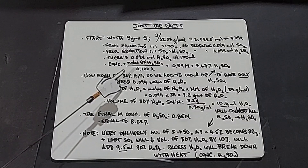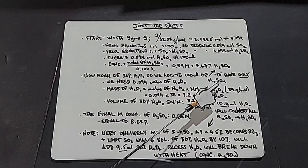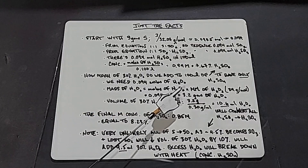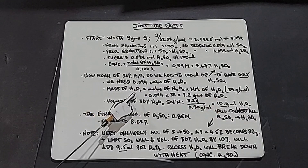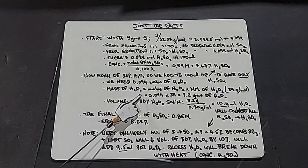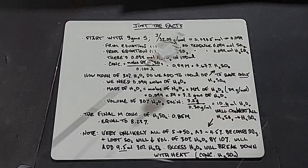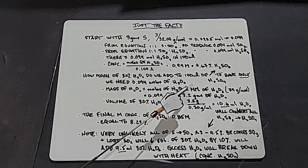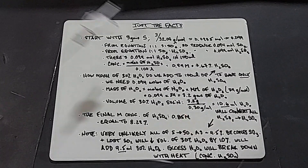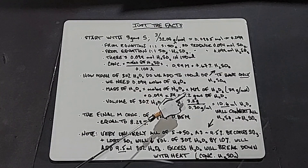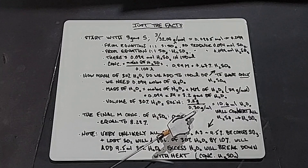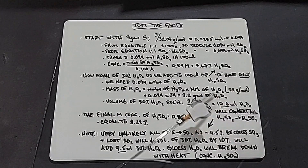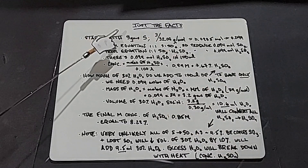Next we determine how much 30% hydrogen peroxide to add to the 100 mL so we end up with only sulfuric acid. We need 0.094 moles of H₂O₂. Its molar mass is 34 g/mol (16×2 + 1×2 = 34). So 0.094 × 34 = 3.2 grams of hydrogen peroxide. Dividing 3.2 grams by 0.3 g/mL (30% solution) gives us 10.6 mL of hydrogen peroxide needed to convert all sulfurous acid to sulfuric acid, assuming all 3 grams of sulfur burns.